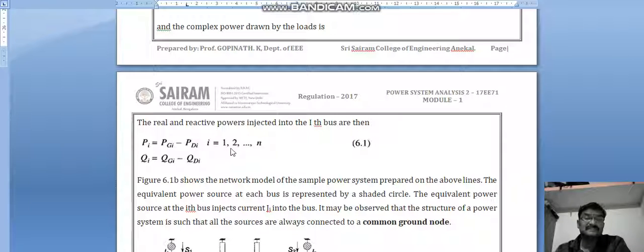The real and reactive powers injected into the ith bus are given by Pi equals Pgi minus Pdi, where i is from 1 to n, and Qi equals Qgi minus Qdi, where i is equal to 1 to n.